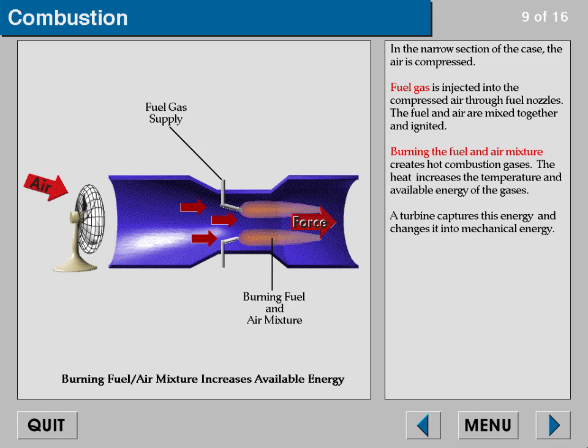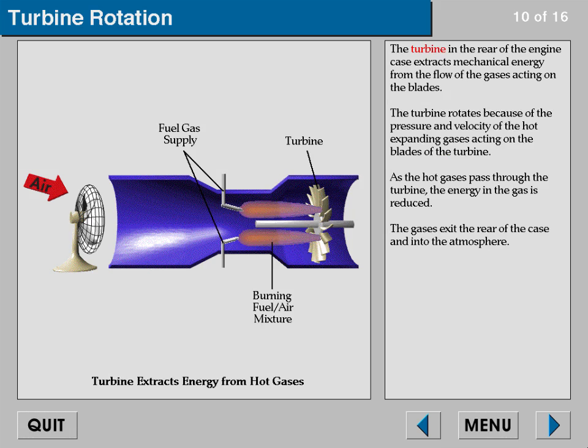A turbine captures this energy and changes it into mechanical energy. The turbine in the rear of the engine case extracts mechanical energy from the flow of gases acting on the blades. The turbine rotates because of the pressure and velocity of the hot expanding gases acting on the blades of the turbine.